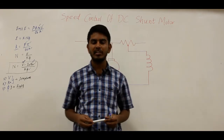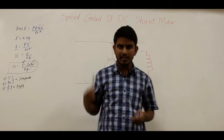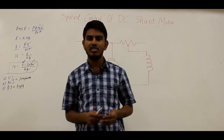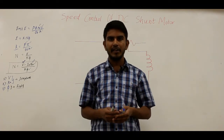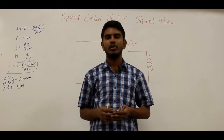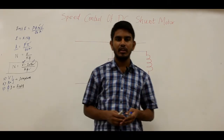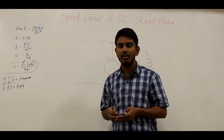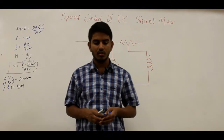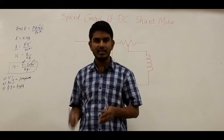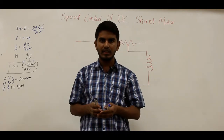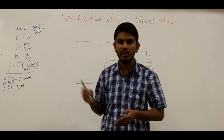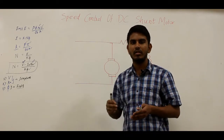Hello friends, in this video let us discuss the speed control of DC shunt motor. Speed control can be defined as an intentional change in the drive speed or shaft speed to a certain value in order to achieve a specific process. We are intentionally changing the speed, and speed control can be done either manually by an operator or by using some automatic control device.